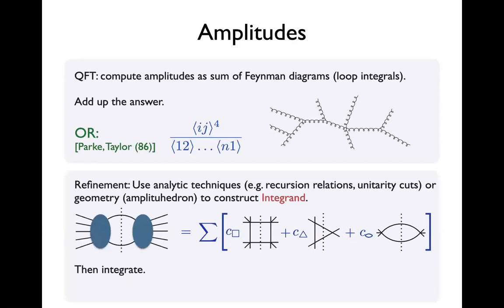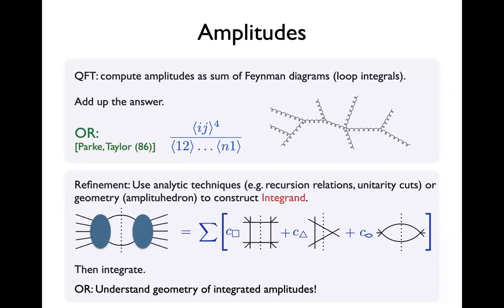This is really a clue that there's something more going on here than the traditional textbook formulation of quantum field theory. There are various refinements: analytic techniques to construct recursion relations or unitarity to construct an integrand — some quantity where you first work this out, and then there are loop integrals to do. What I really want to emphasize is that I'm trying to explain an alternative: can we understand the geometry behind integrated amplitudes, and if so, can we just write down those amplitudes without constructing an integrand first?